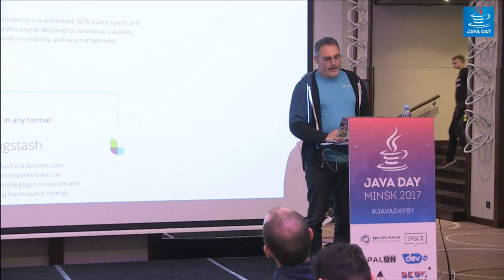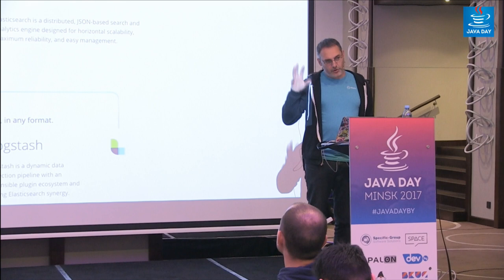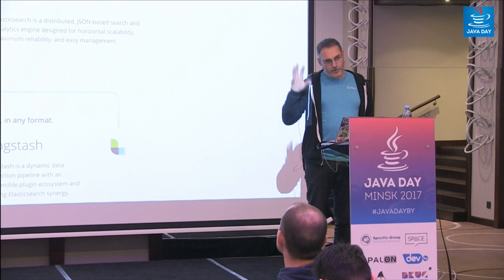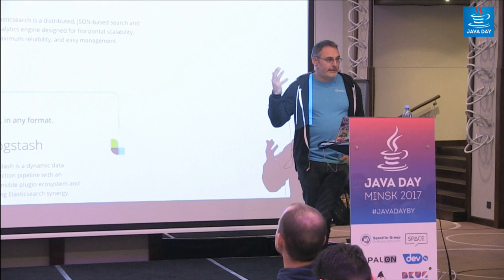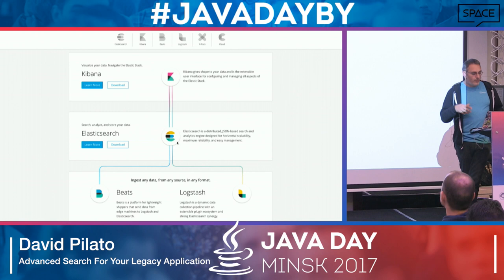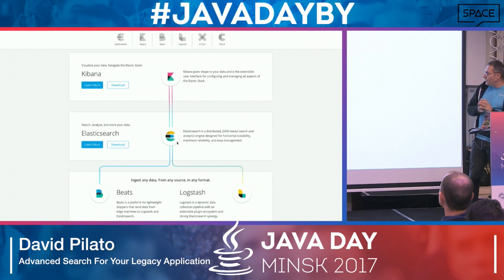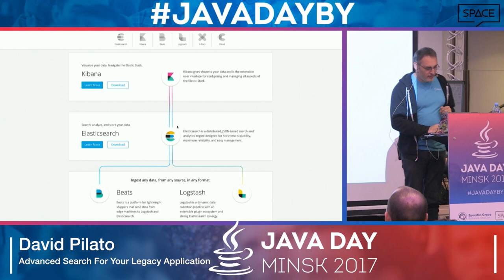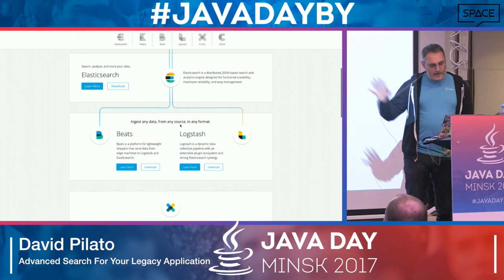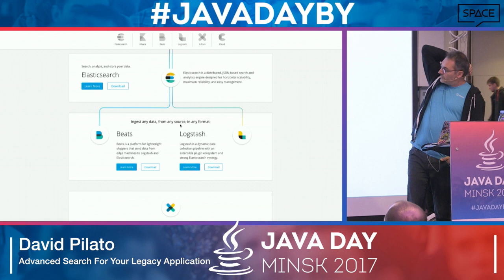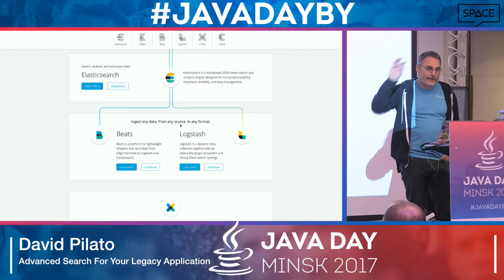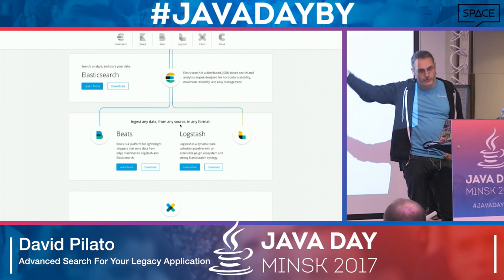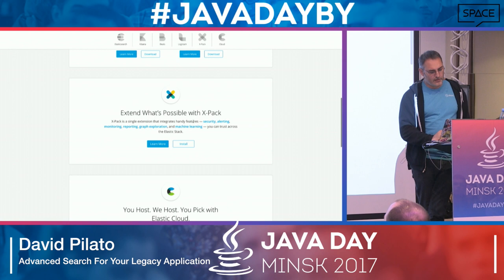At Elastic we are building a stack named the Elastic Stack. Elasticsearch is the core — you send JSON documents, Elasticsearch indexes them, and you can run searches and compute aggregations. It's highly scalable to petabytes of data. On top of that we provide Kibana for visualization, and an ingest part composed of Beats and Logstash — an ETL-like tool to extract, transform, and load data into Elasticsearch or MongoDB or S3.